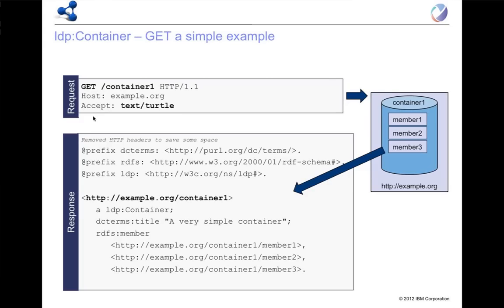Here's probably the simplest example. You do a GET on container one, looking to get a text/turtle representation of it. It comes back with a set of statements where the subject is container one. You can see there's a type called LDP container — that's what type of resource this is. It has a title as well. Reusing a known predicate here as one of the best practices, there's a number of members: one, two, three. Very simple — just an HTTP interaction to fetch the description and representation of that container.